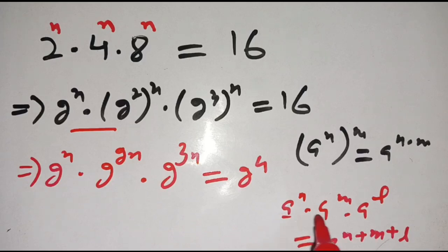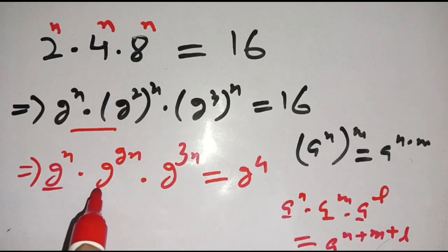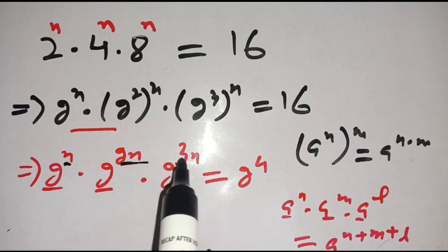Here the base is 2 and powers are different: n, 2n, 3n. Then it can be written as 2 power n plus 2n plus 3n is equal to 2 power 4.